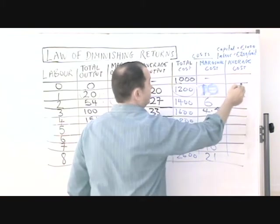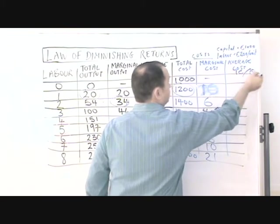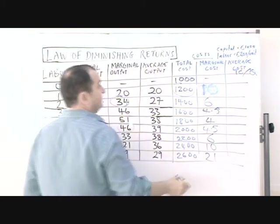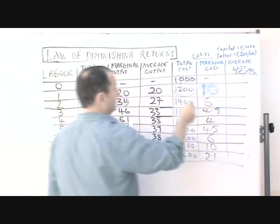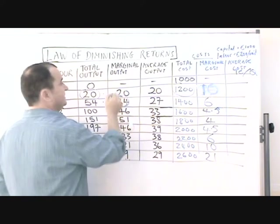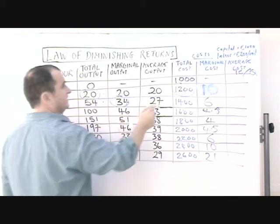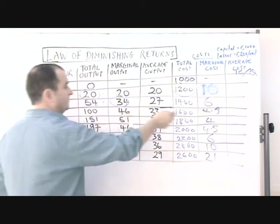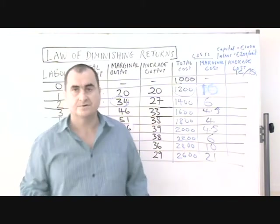Of course, average cost is simply total cost divided by quantity. So here it's 1200 divided by 20, here it's 1400 divided by 54, and so on — you could work that out for yourself.